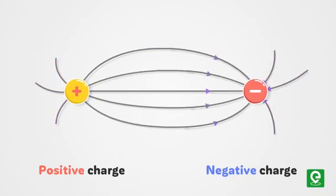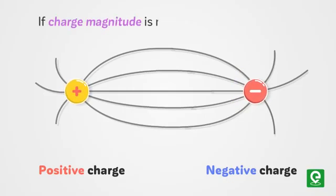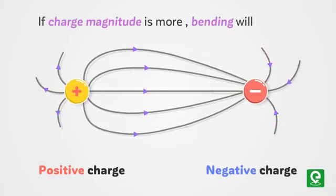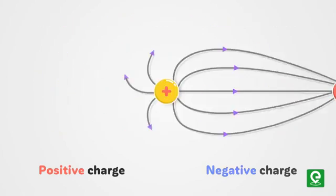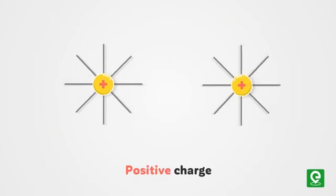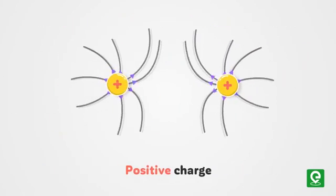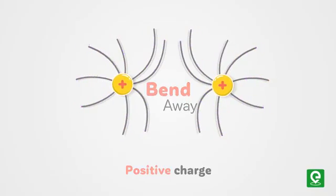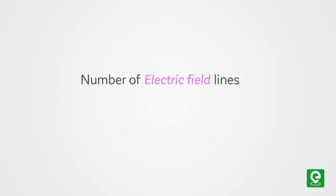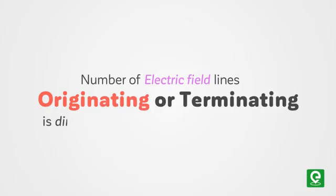Electric field lines have a tendency to terminate towards a negative charge — thus lines will bend and terminate towards the negative charge. If the charge magnitude is more, the bending will be more. Similarly, electric field lines also have a tendency to bend away from positive charges.